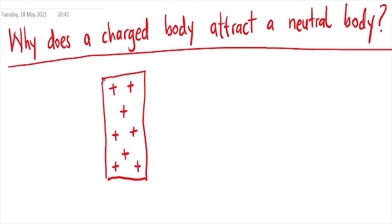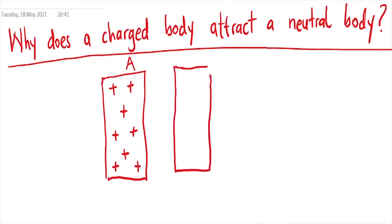We know that there are some negatives in this body, but this body is just having more positives than negatives. Then we have another body here that is neutral. This body being neutral means that it has an equal amount of positives and negatives. Let's call it body B — this is neutral.